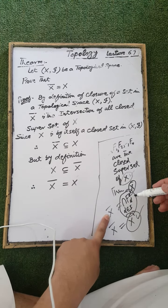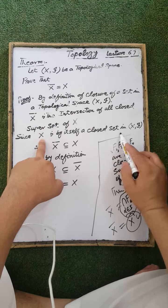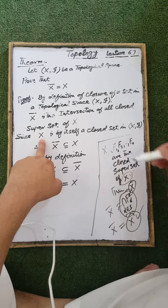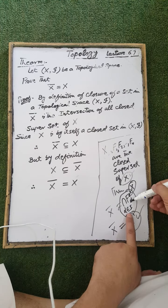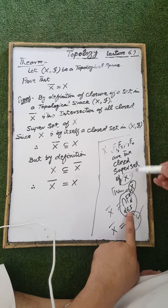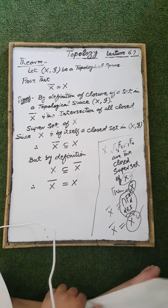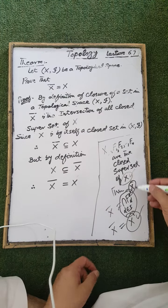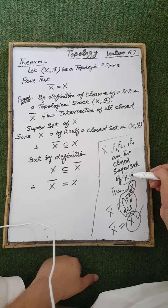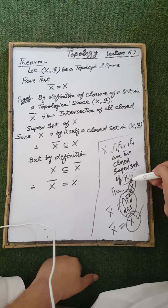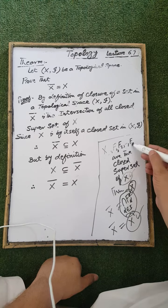The ground set X by itself is a closed set in the topological space X. Therefore, in the operation of taking the intersection of the closed supersets of X, the ground set X is included. That is, F1, F2, up to Fn are the closed supersets of X, and X itself is also a closed superset of X.